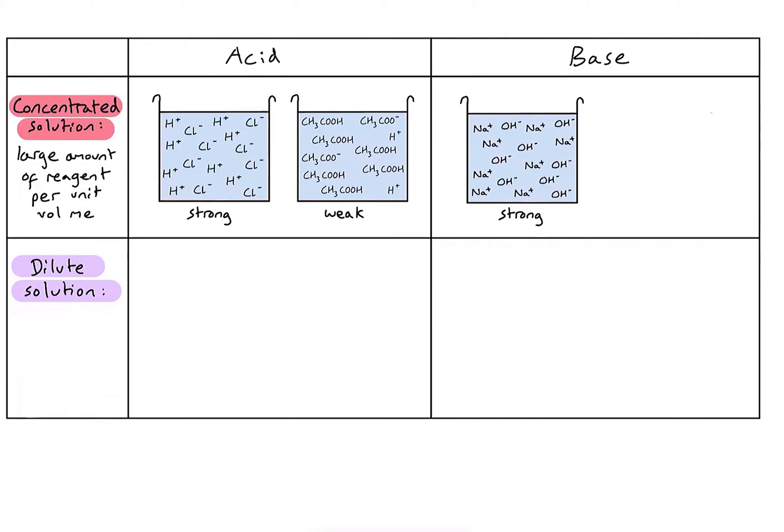Looking at a concentrated solution of our weak base, ammonia: there is still lots of material in the solution, making it concentrated. However, because it's only a weak base, only a very small number of those ammonia molecules have actually ionised.